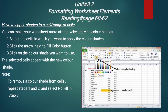What is the procedure? Step number one: select the cells in which you want to apply the color shades. Cells का आपने इंतखाब करना है in which you want to apply the color shades — जहां पर आप चाहते हैं कि color का shade change हो, तो पहले उन cells का इंतखाब करना है जिसमें आप अपनी पसंद का color apply करना चाहते हैं. Second step: click the arrow next to the fill color button. आपने arrow को fill color button पर click करना है. Number three: click on the color shade you want to use.